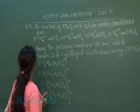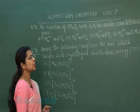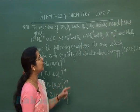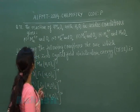Next question is question number 71. The reaction of KMnO4 with hydrogen peroxide in acidic condition gives.